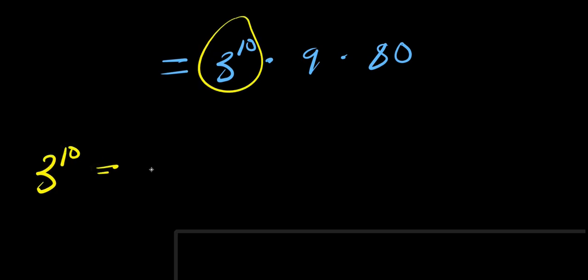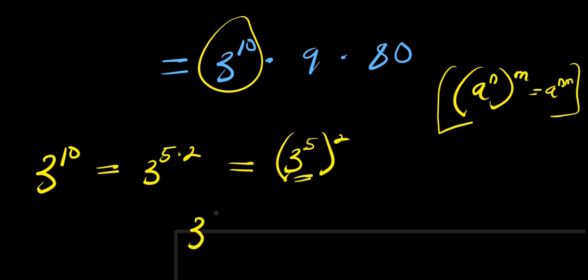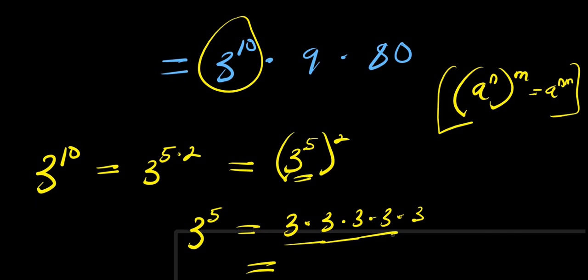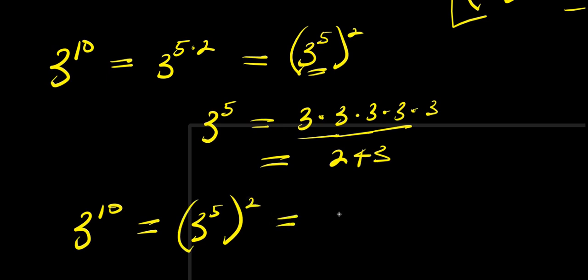I can write 3 to the power of 10 as 3 to the power of 5 times 2, which equals (3 to the power of 5) squared. Now, what is 3 to the power of 5? 3 × 3 × 3 × 3 × 3: 3 × 3 is 9, 9 × 3 is 27, 27 × 3 is 81, 81 × 3 is 243. So 3 to the power of 10 equals 243 squared.